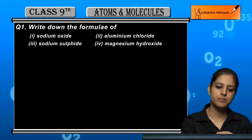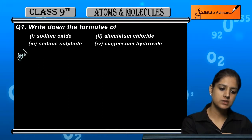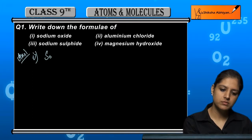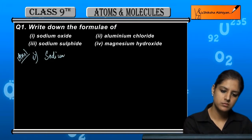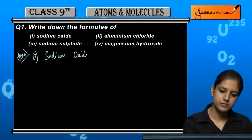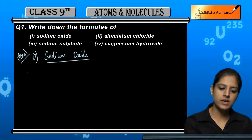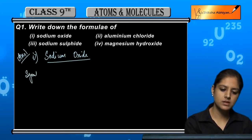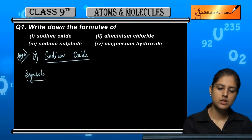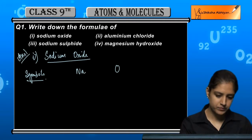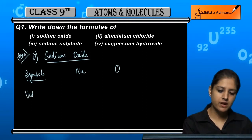Let's take them one by one. First is sodium oxide. The first step for writing formulae is to write the symbols. Sodium's symbol is Na and oxide means O. Next step is valency.